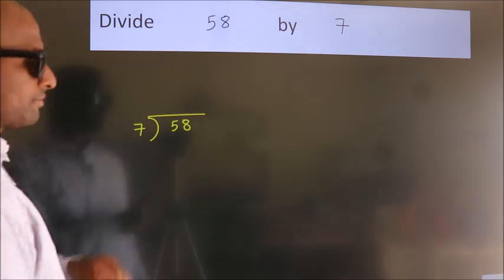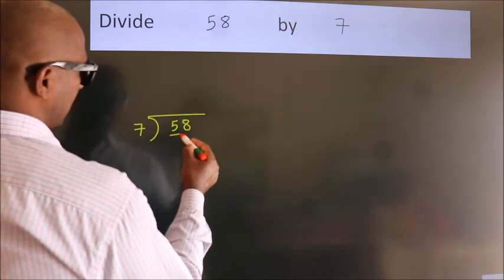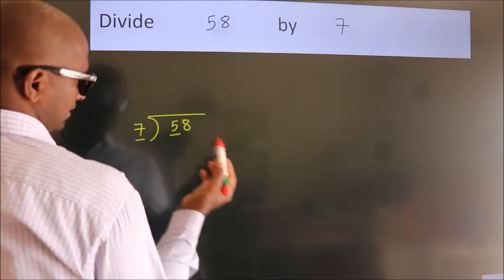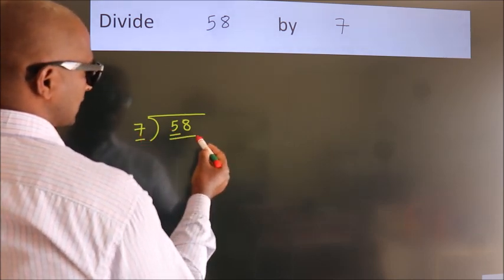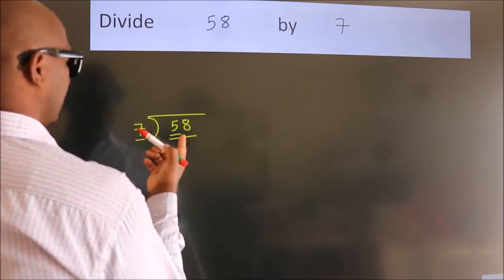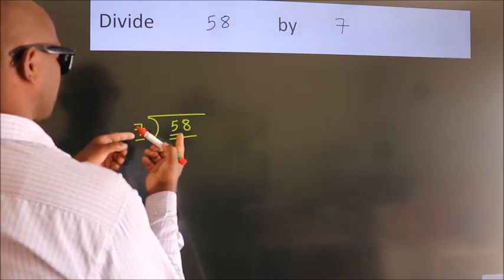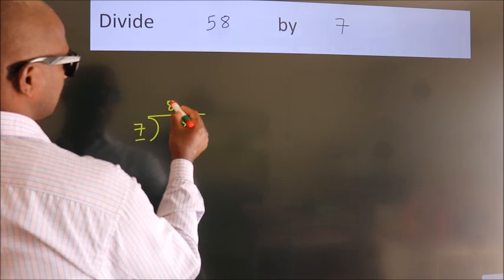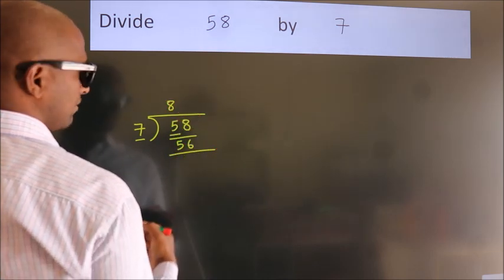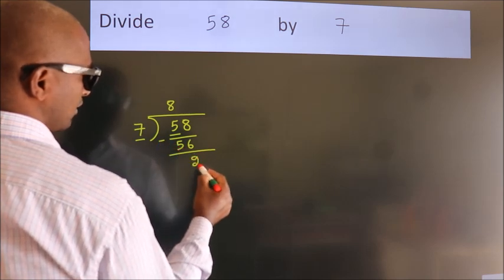Next, here we have 5, here 7. 5 is smaller than 7, so we should take two numbers, 58. A number close to 58 in the 7 table is 7 times 8, which is 56. Now we subtract and get 2.